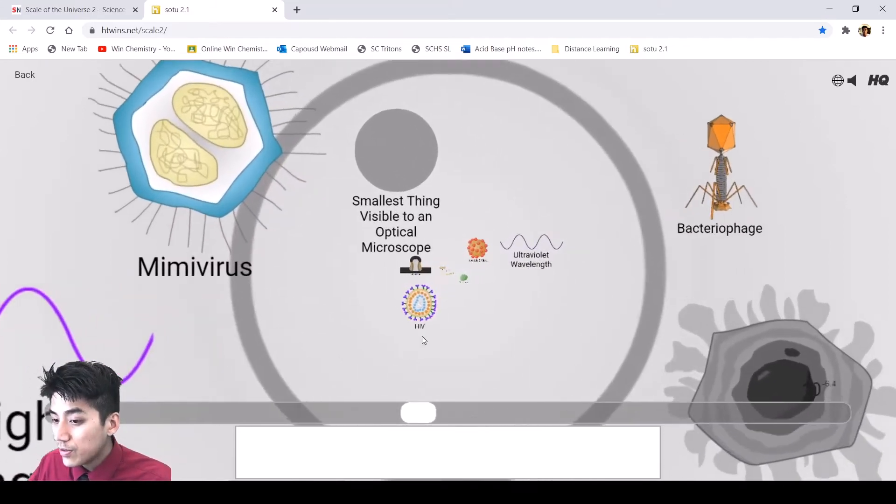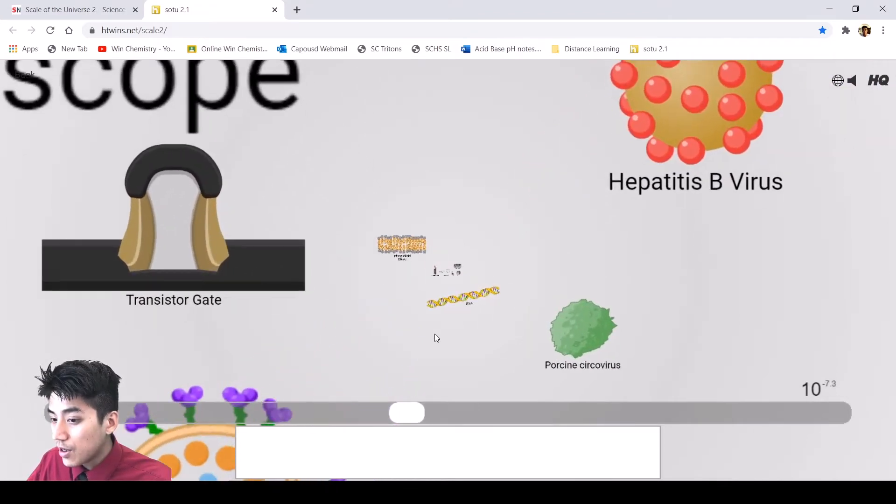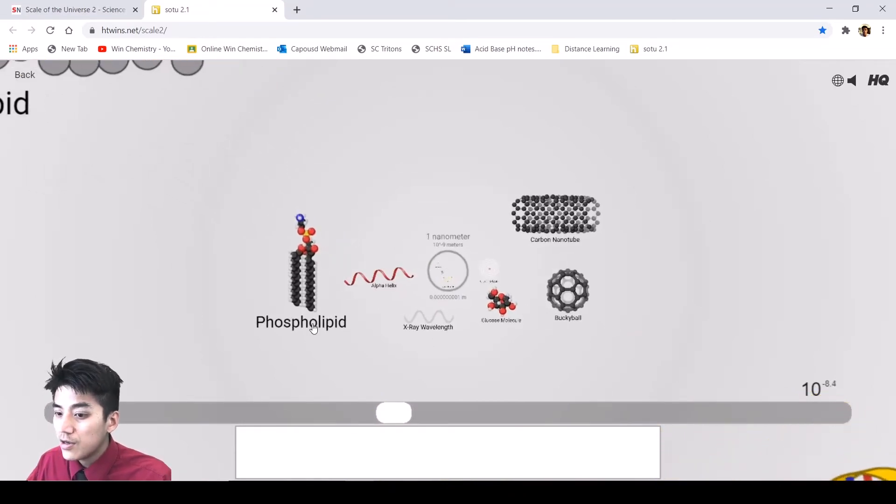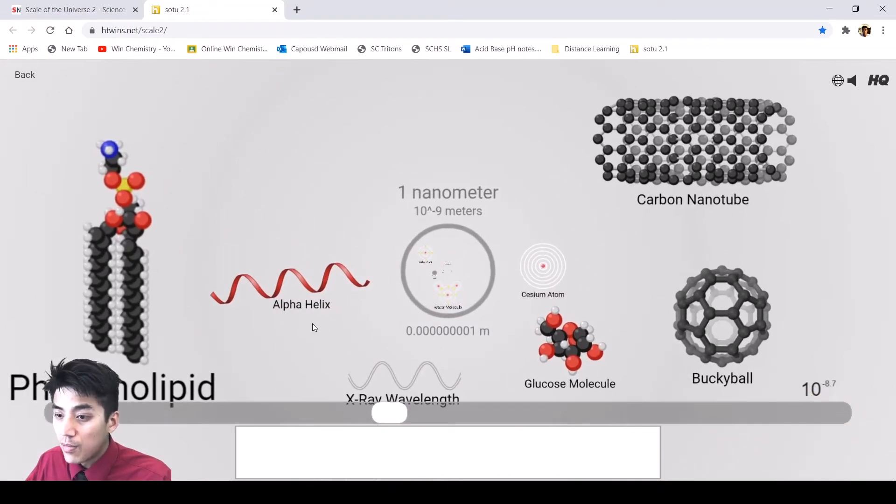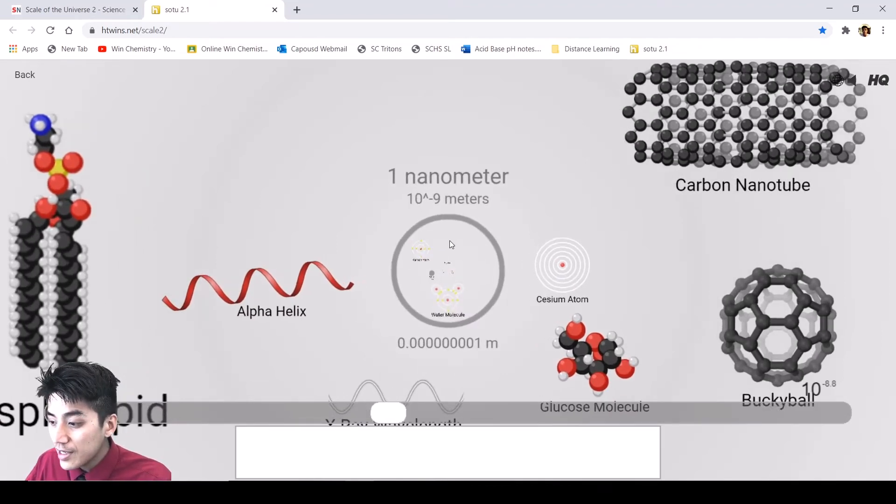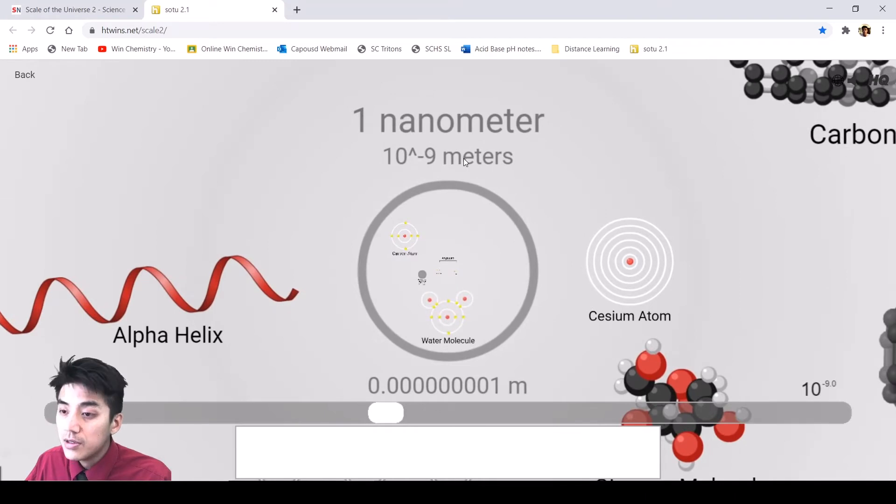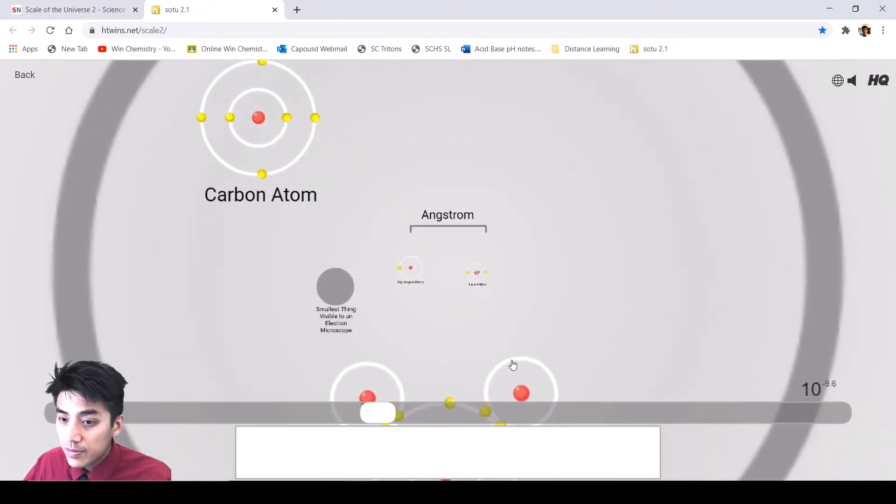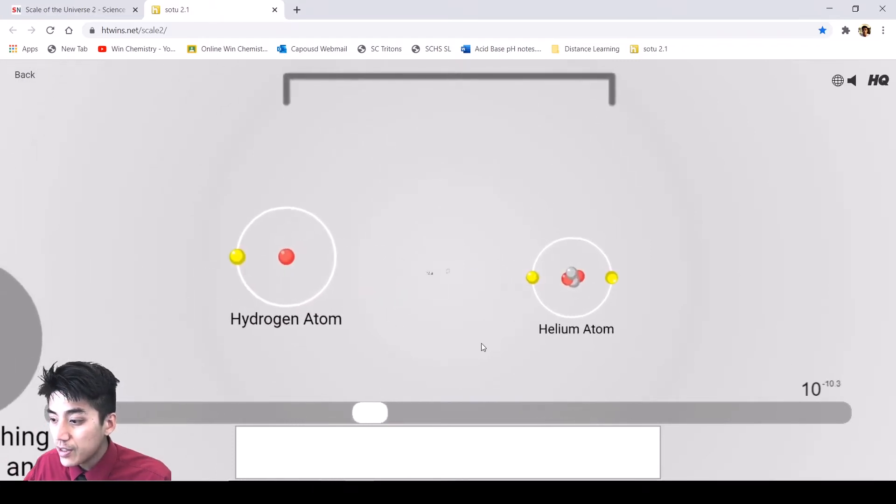And we can continue on because there are things much smaller than that. Now we start seeing phospholipid bilayer and alpha helix molecules. 10 to the negative 9 is nano. And nano just means it's a small number. It's in the neighborhood of 10 to the negative 9 or this number that's listed down here, 0.000000001 meter or 1 billionth of a meter. So now we start seeing atoms. There's a hydrogen atom, a helium atom.